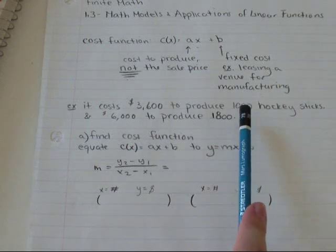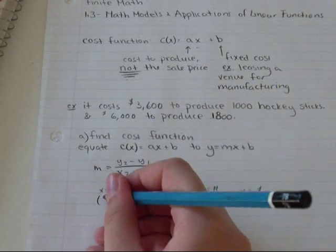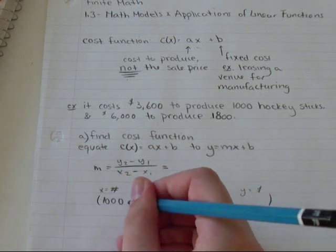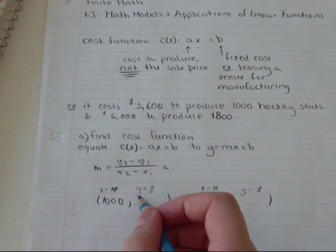So in the first one, to make 1,000 hockey sticks, so the number is 1,000, the cost is $3,600.